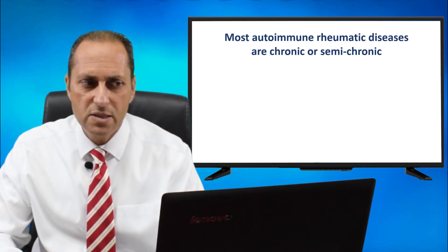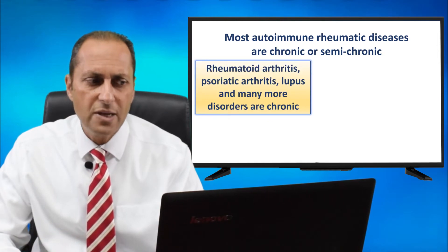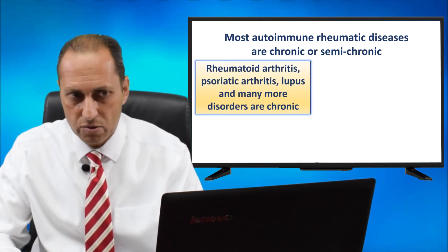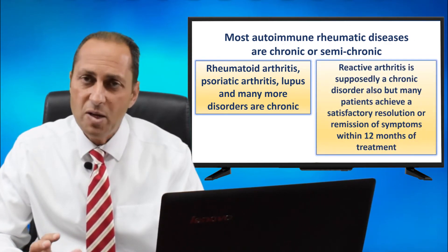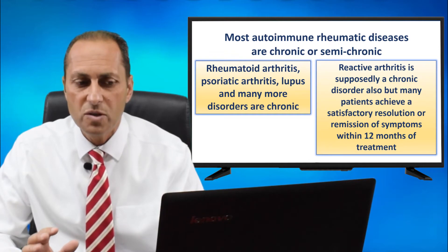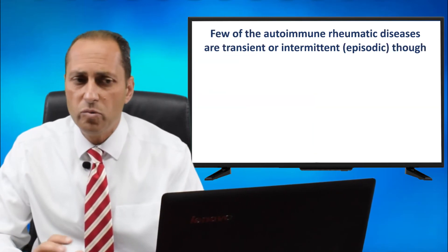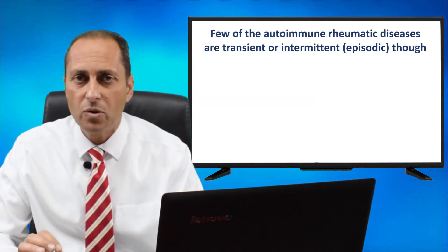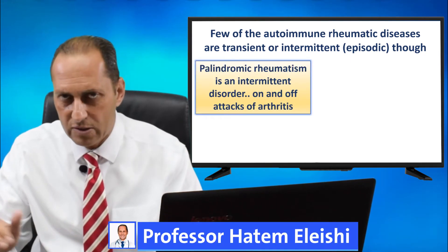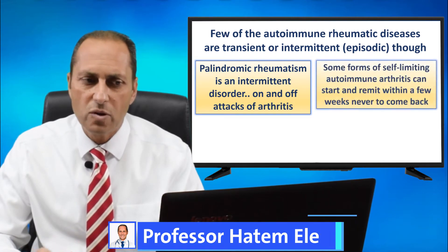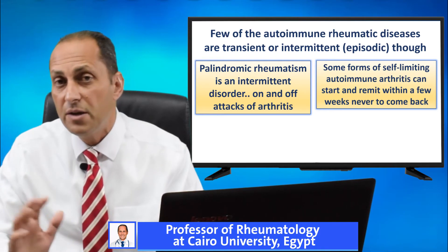Most autoimmune rheumatic diseases are chronic or semi-chronic — rheumatoid arthritis, psoriatic arthritis, lupus, and many more. Reactive arthritis is supposedly chronic also, but many patients achieve satisfactory resolution of symptoms and remission even within 12 months of treatment. A few autoimmune rheumatic diseases are transient or intermittent: palindromic rheumatism is an intermittent disorder with on-and-off attacks of arthritis, and some forms of self-limiting autoimmune arthritis can start and remit within a few weeks, never to come back.